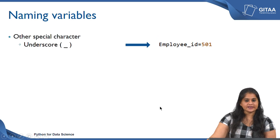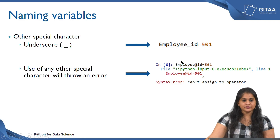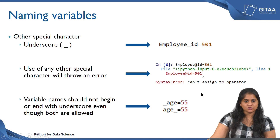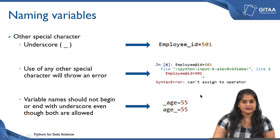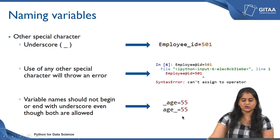The only special character allowed while naming a variable is underscore. For example, if I want to create a variable that conveys the employee id, I can separate employee and id with an underscore. If you use any other special characters you will get an error saying cannot assign to the operator. Though underscore is allowed, it is better to not begin or end with an underscore — that is a common unaccepted naming convention, though it is accepted by the compiler and you are not likely to get an error.